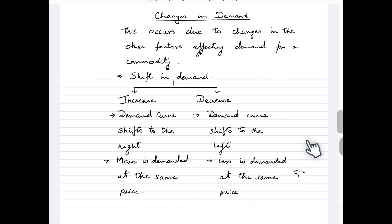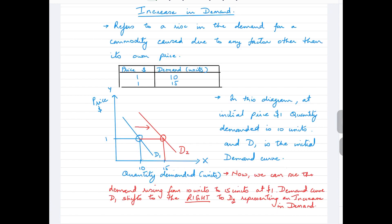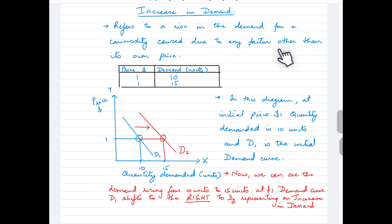Let's take a look at what an increase in demand is, as far as its graphical representation is concerned. In this slide we can see a graph, a schedule, and a heading which says 'Increase in Demand.' An increase in demand is a situation where there is a rise in the demand for a commodity caused by any factor that affects demand other than its own price.